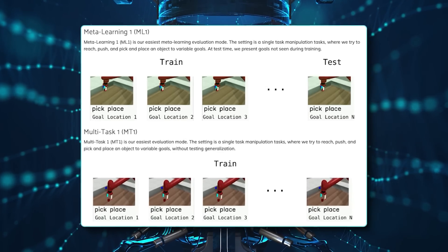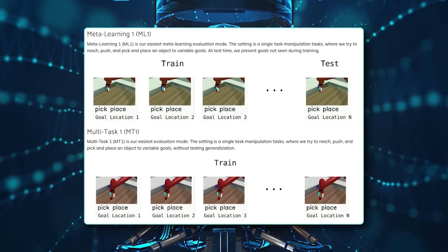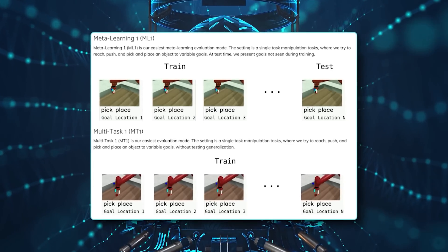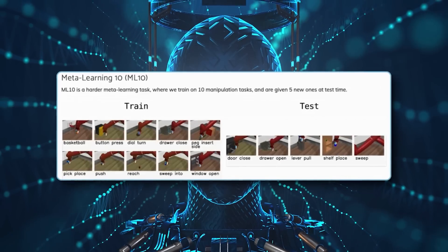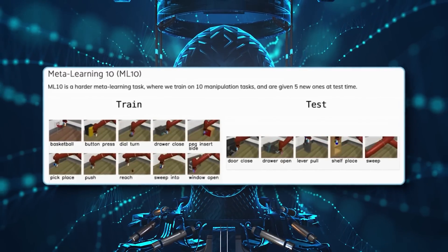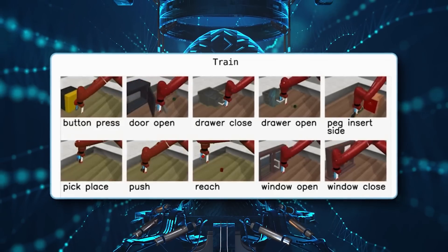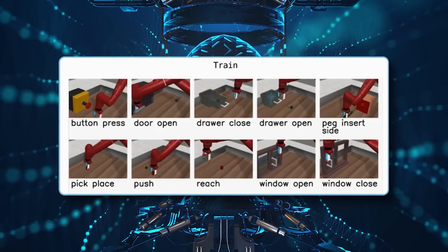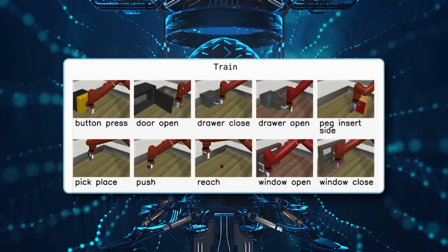By doing this, they were able to teach HPT using data that wasn't just limited to robots, but included examples of human actions, too. To make all this work, the researchers had to experiment with how to handle this massive mixed dataset. They tried scaling up the model, testing it with different batch sizes and numbers of data points to see how much the model could improve with more data.